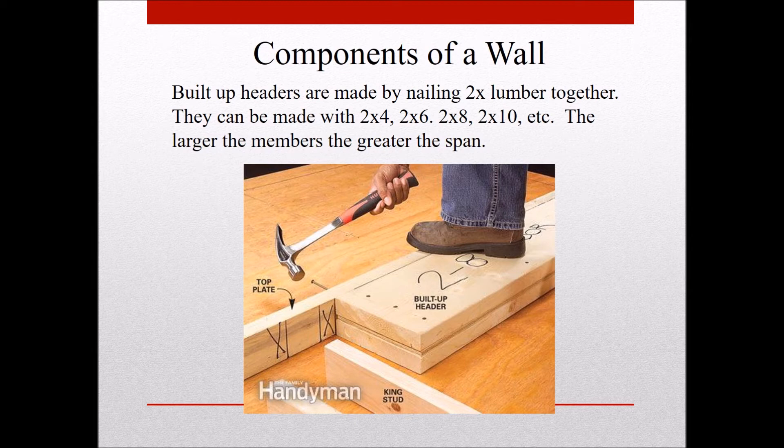This is a built-up header — the kind we build here. You have one framing member and then another framing member. Normally we don't put a piece of plywood between them; it's not really a requirement but some people do it. Built-up headers can be made with two-by-fours, two-by-sixes, two-by-eights, two-by-tens, whatever. If you've got a greater span — a bigger door or larger rough opening — you're going to have to use larger members to build the header.